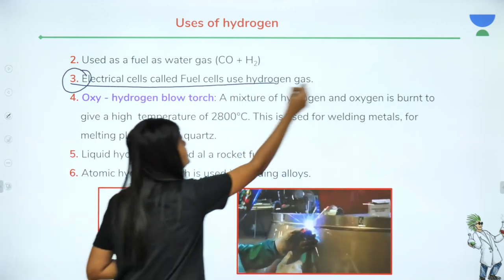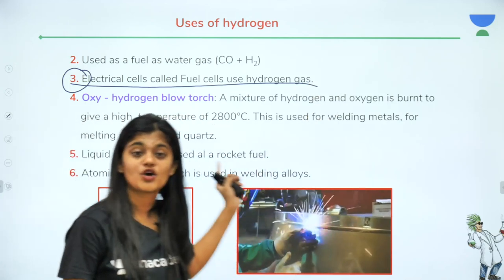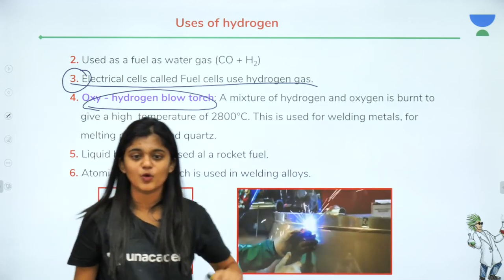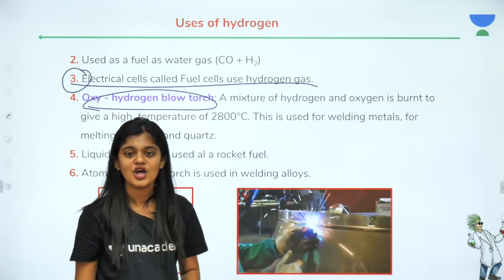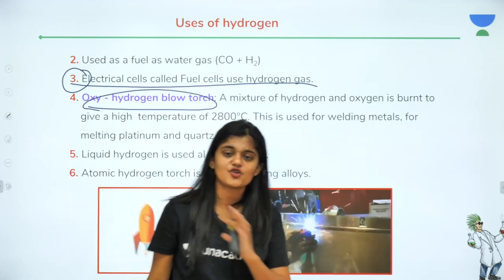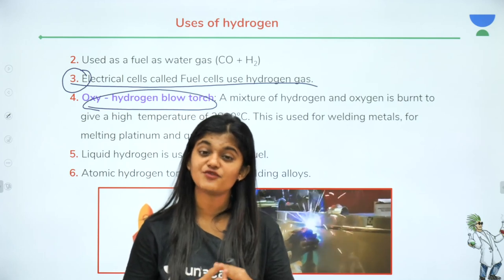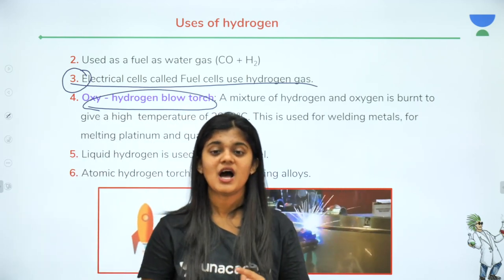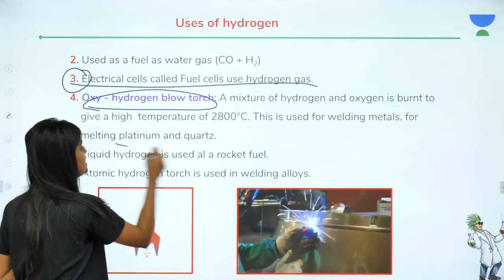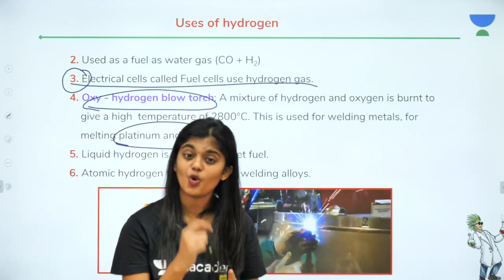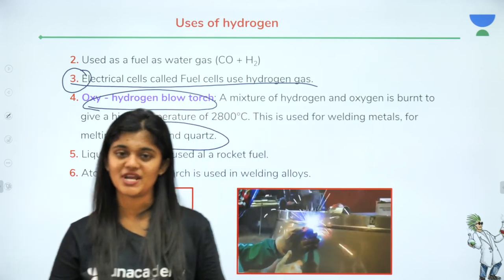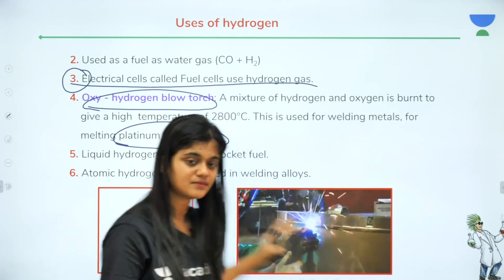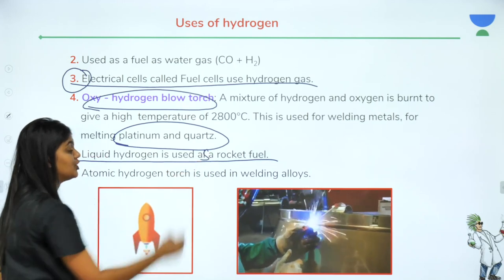Seventh: hydrogen is used in fuel cells. Eighth: it is used in the oxy-hydrogen blow torch, where hydrogen and oxygen are mixed. When burning this mixture, a very high temperature of around 2800°C is achieved, allowing welding and melting of very hard materials like platinum and quartz. The mixture of oxygen and hydrogen being burned here is the oxy-hydrogen blow torch.